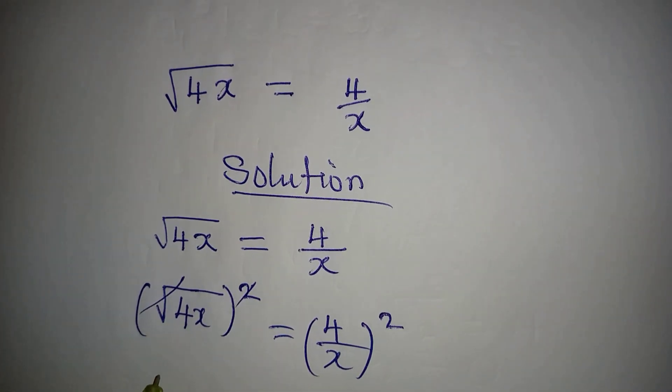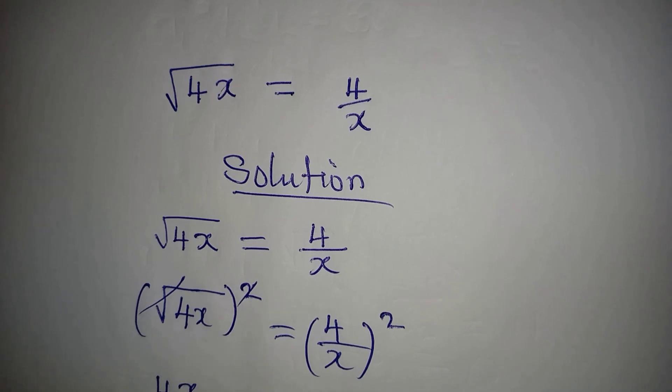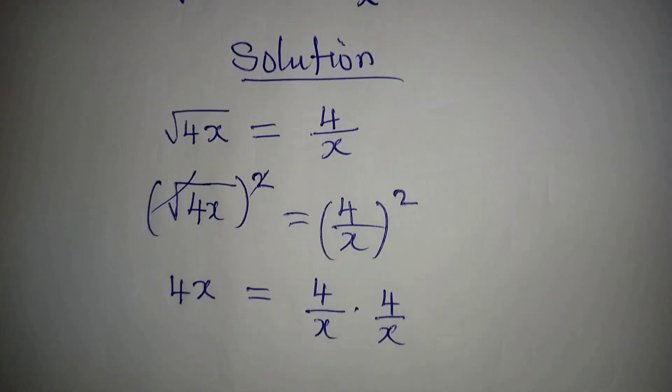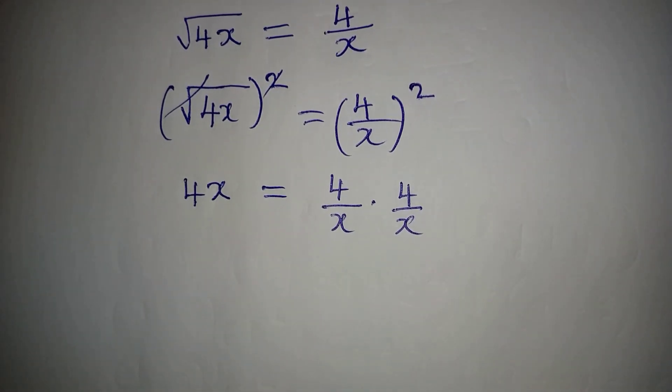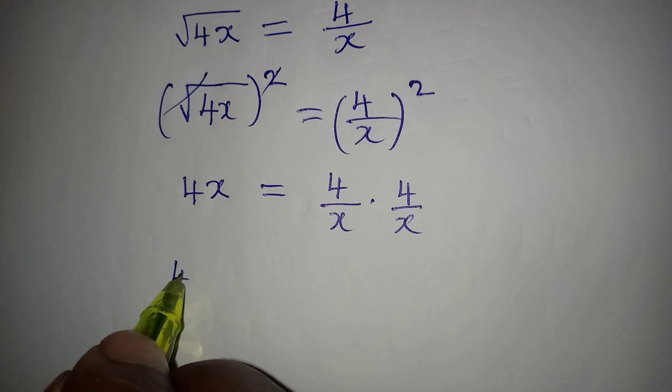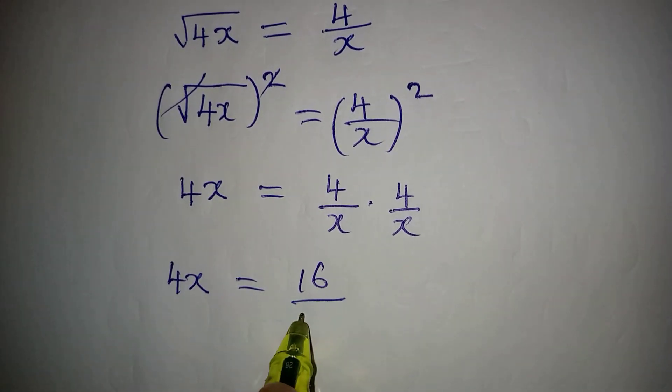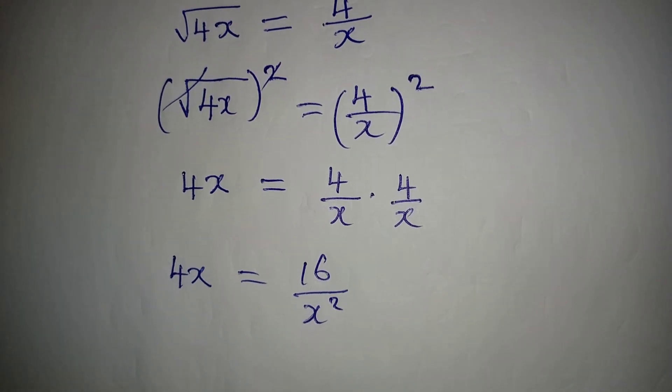And then 4x will be equal to 4 over x times 4 over x. This is what it is. Now 4x here is equal to 16 over x squared. Then what can we do? Cross multiply, right?